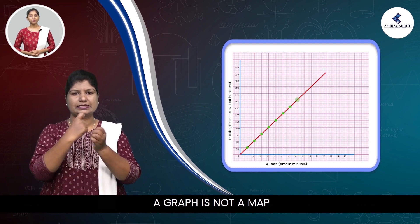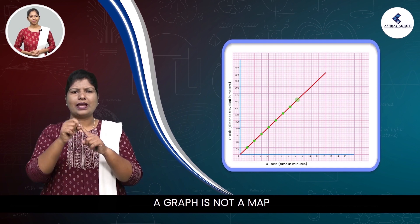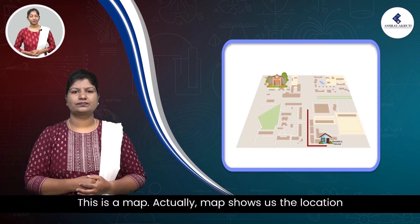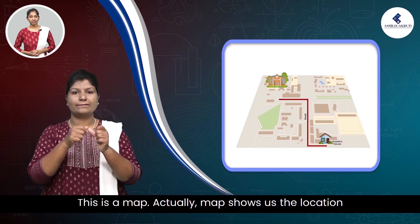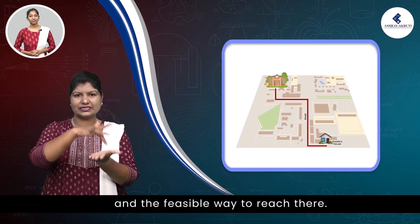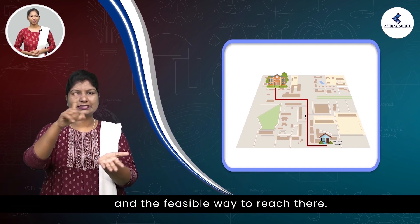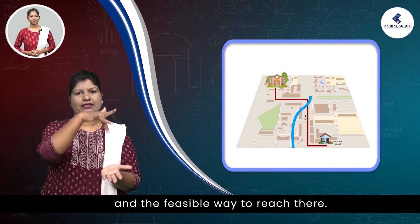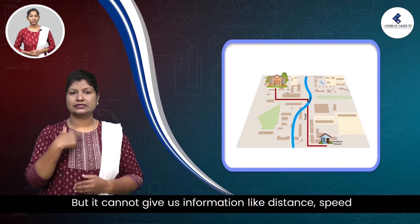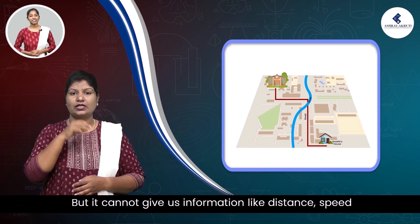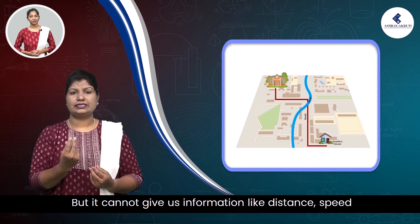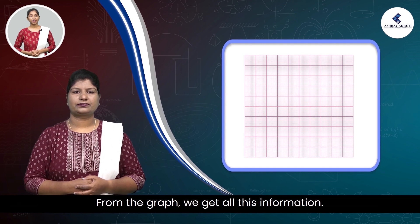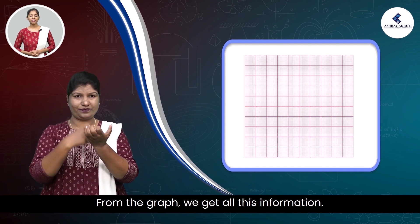A graph is not a map. This is a map. Actually, a map shows us the location and the feasible way to reach there. But, it cannot give us information like distance, speed and time to reach there. From the graph, we get all this information.